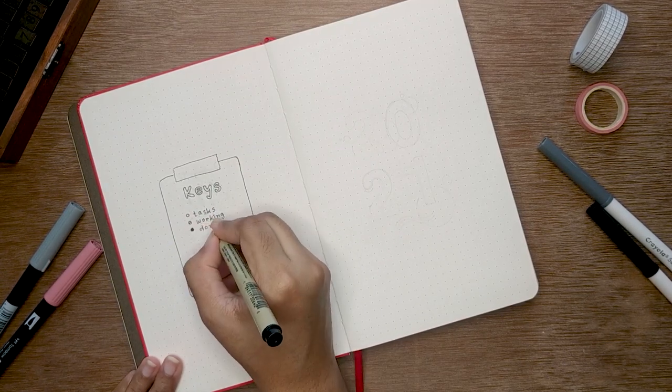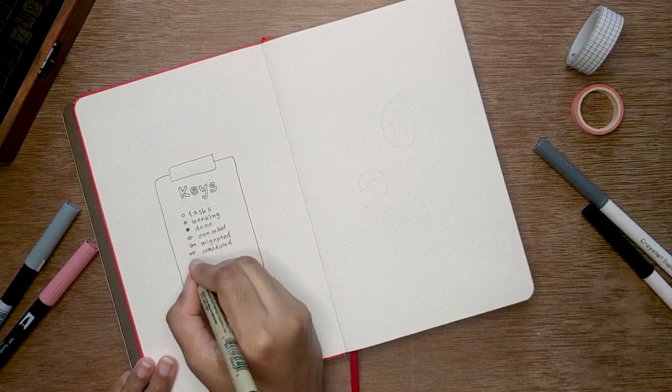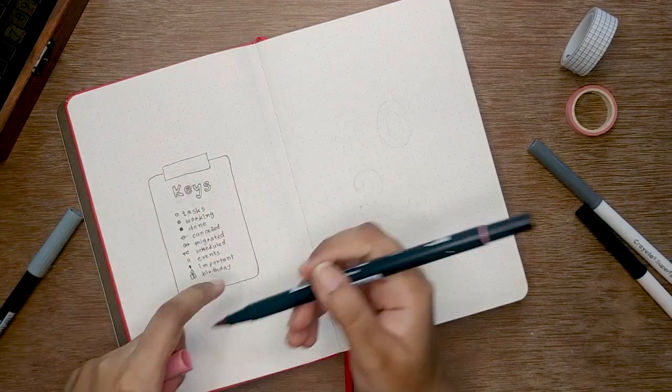Let's start setting up this notebook by writing my name on it. On the next page, I'm adding my keys again as I've changed some of my notation in the previous month.